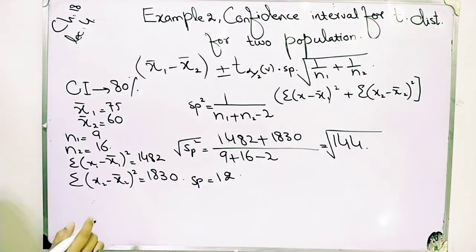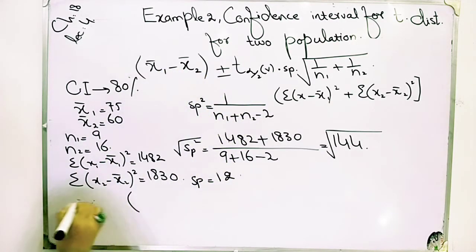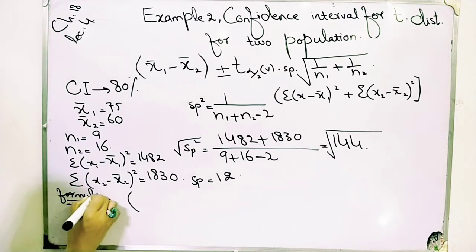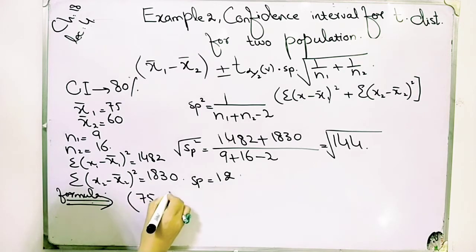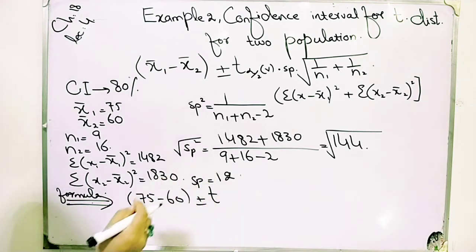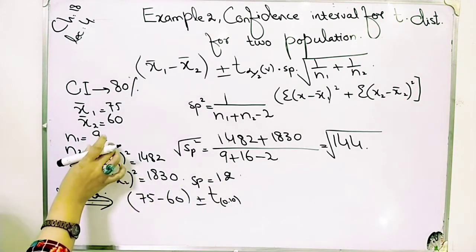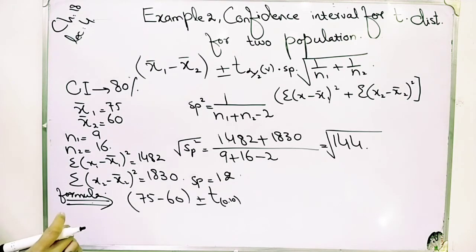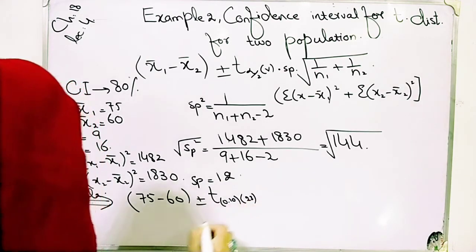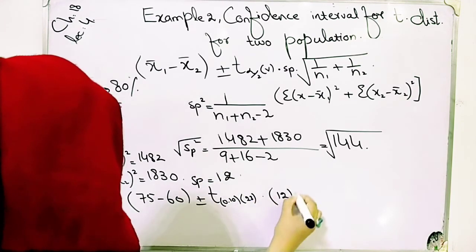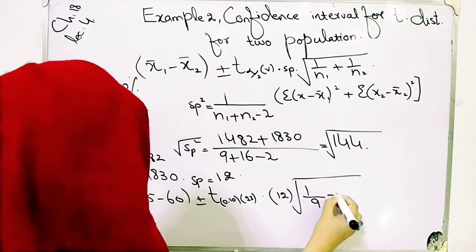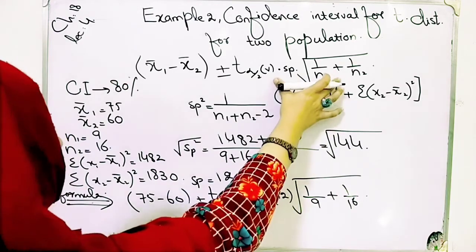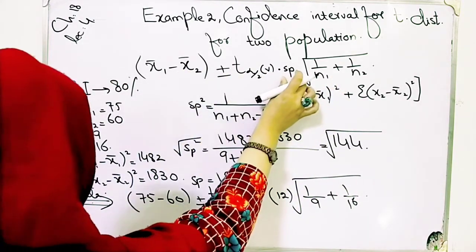Now, with sp value of 12, we put simple values into the formula. x̄₁ minus x̄₂: we have 75 minus 60, plus or minus t(α/2). For 80% confidence, we have α/2 = 0.10. Degrees of freedom: 16 plus 9 = 25, minus 2 = 23 degrees of freedom. Then the pooled estimator sp is 12, and we have under root of 1/9 plus 1/16. Simple values are put here.